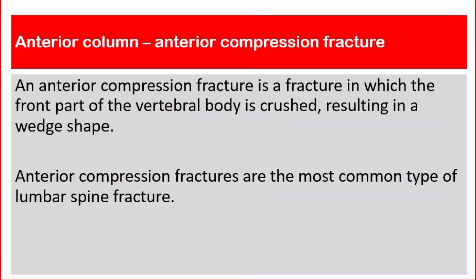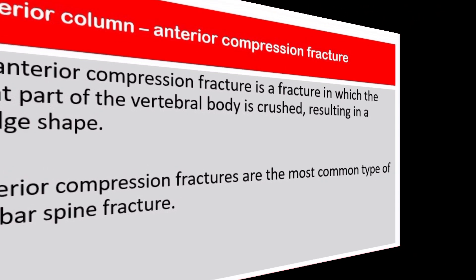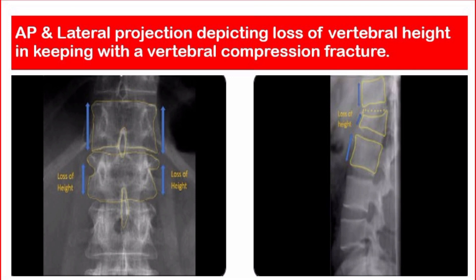Anterior column — Anterior compression fracture: An anterior compression fracture is a fracture in which the front part of the vertebral body is crushed, resulting in a wedge shape. Anterior compression fractures are the most common type of lumbar spine fracture. This picture shows anterior-posterior and lateral projections depicting a loss of vertebral height in keeping with a vertebral compression fracture.